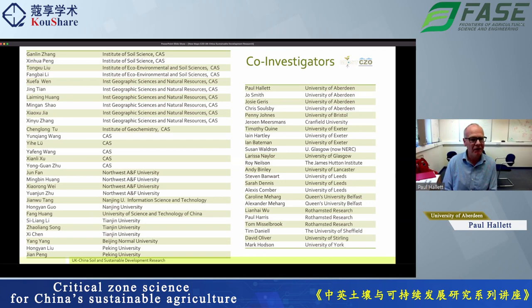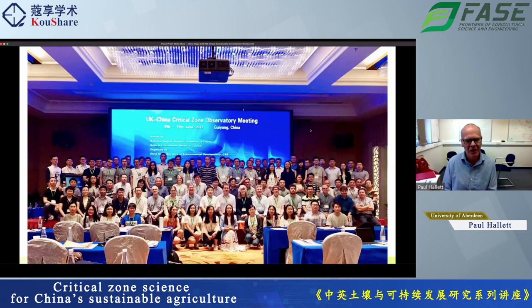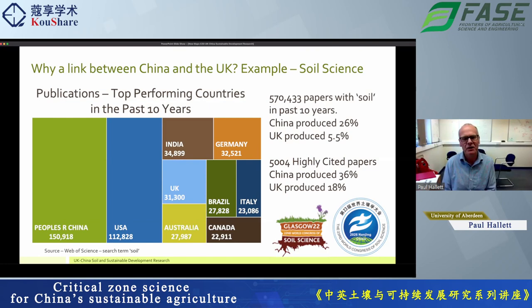As you go through the slides, you'll see various people credited as we show different people's work. It's not just the team of investigators that were responsible — there were a wide body of PhD students, postdocs, and other researchers brought in. This shows just a subset of us at one of our project meetings in Guiyang. You might ask: why would China want to link with the UK and why would the UK want to link with China? I'll take one of the disciplines in critical zone science, which is soil science, and look at Web of Science over the past 10 years.